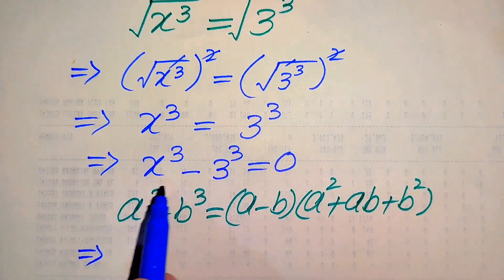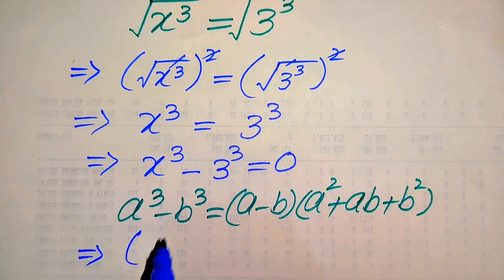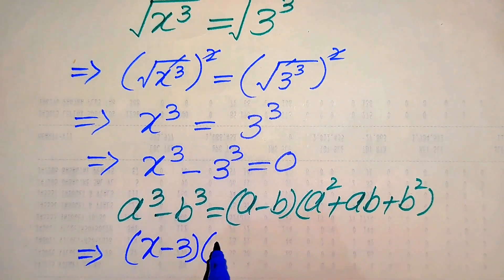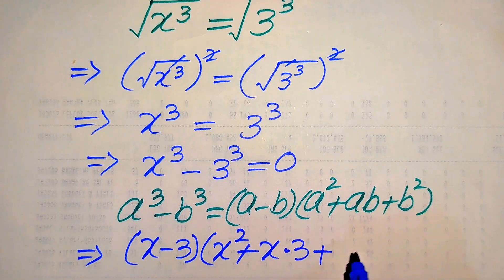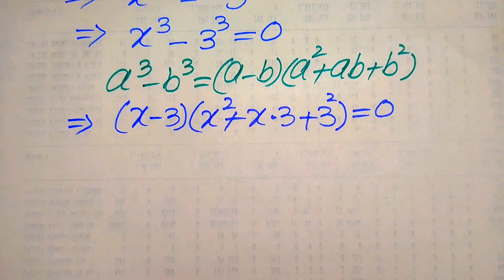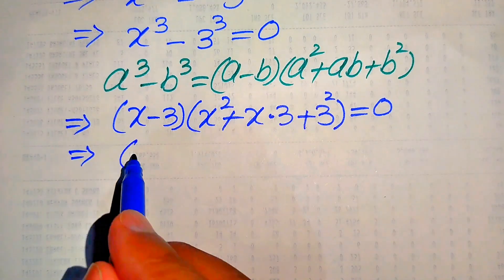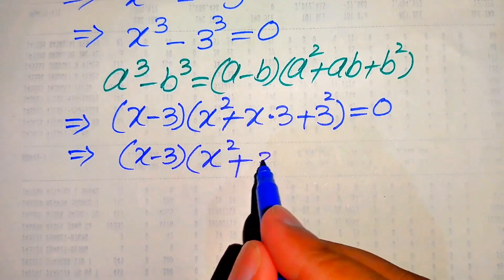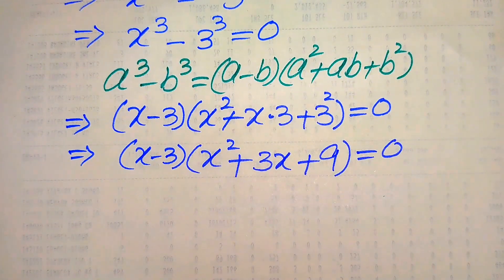So we write the equation in factored form. The first factor is a minus b, where a is x and b is 3, giving x minus 3. The second factor is a squared plus ab plus b squared, which becomes x squared plus 3x plus 9, since 3 squared equals 9. So the full equation is: (x minus 3)(x squared plus 3x plus 9) equals zero.